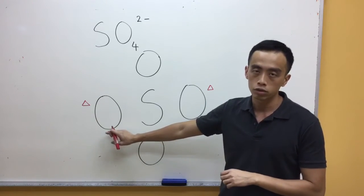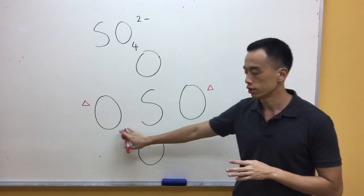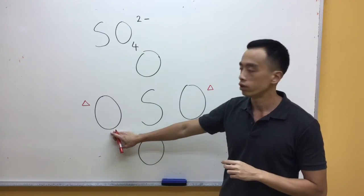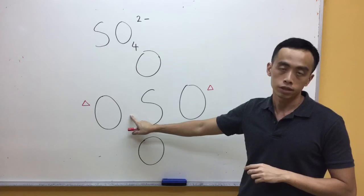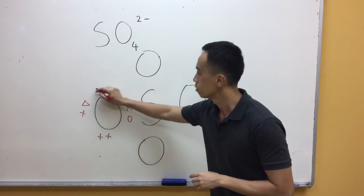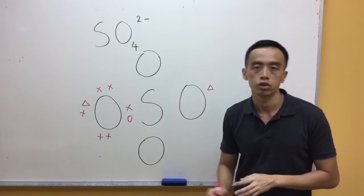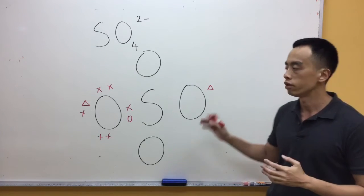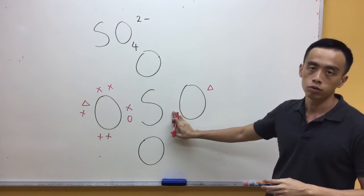Once we assign the additional electron to this oxygen, we account for the bond between this oxygen and the central atom. This oxygen requires two electrons to complete its octet; it already has one electron from the negative charge, so it only requires one more electron from the central atom, forming a single bond with sulphur. The oxygen on the right-hand side is exactly the same — it already has an additional electron, so it also needs just one more and forms a single bond with sulphur.